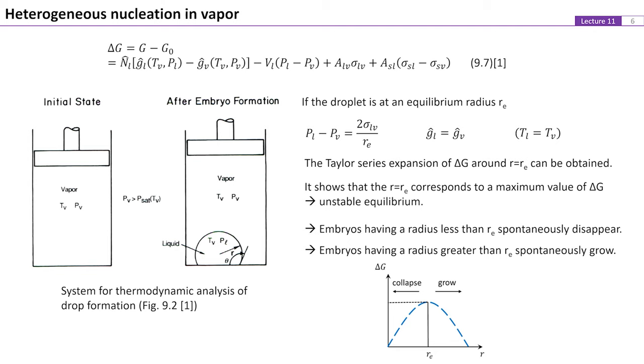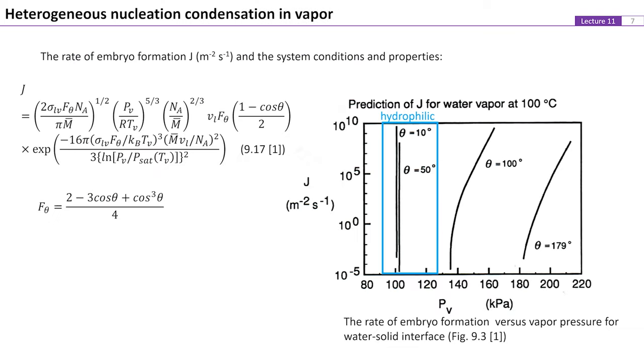Therefore, embryos having a radius less than Re spontaneously disappear. Embryos having a radius greater than Re spontaneously grow. Also similar to the analysis for nucleation boiling, the rate of embryo formation J and the system conditions as well as fluid properties can be derived. J represents the rate at which embryos of critical size are generated. As J increases, the probability that a bubble will exceed critical size and grow spontaneously becomes greater. If a threshold value of J can be specified, the corresponding supersaturated limit of temperature or pressure can be determined for a given system.